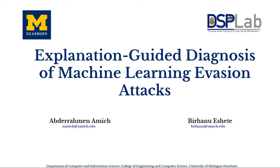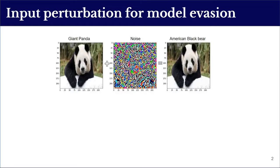Welcome everyone. Our paper is entitled 'Explanation Guided Diagnosis of Machine Learning Evasion Attacks.' The authors are myself, Abdirahman Amish, and my advisor Professor Burhano Icitti. Adversarial machine learning has been extensively studied in recent years, and research has shown that even minor input perturbations can lead to successful machine learning evasion attacks.